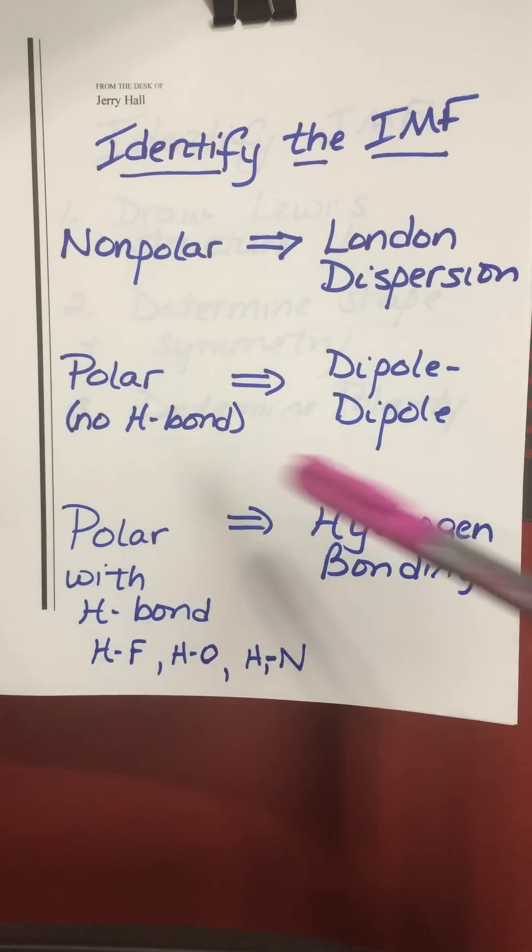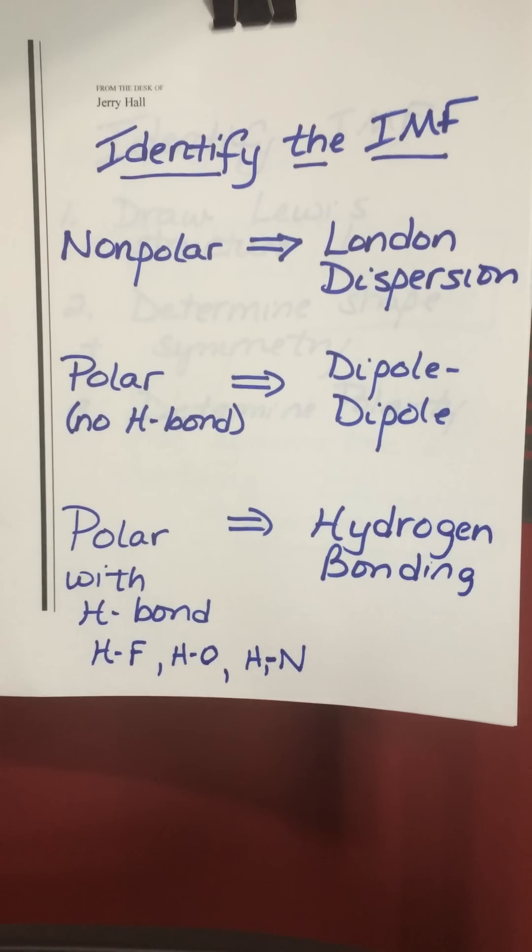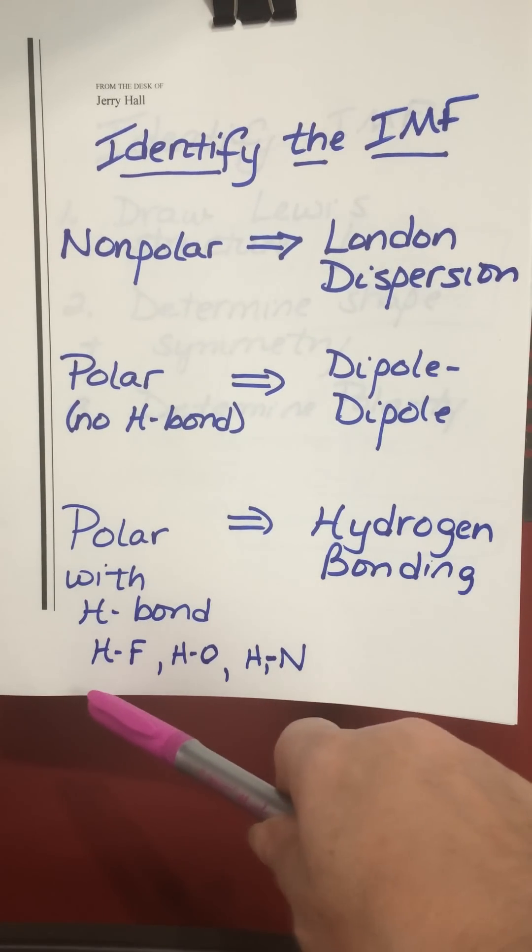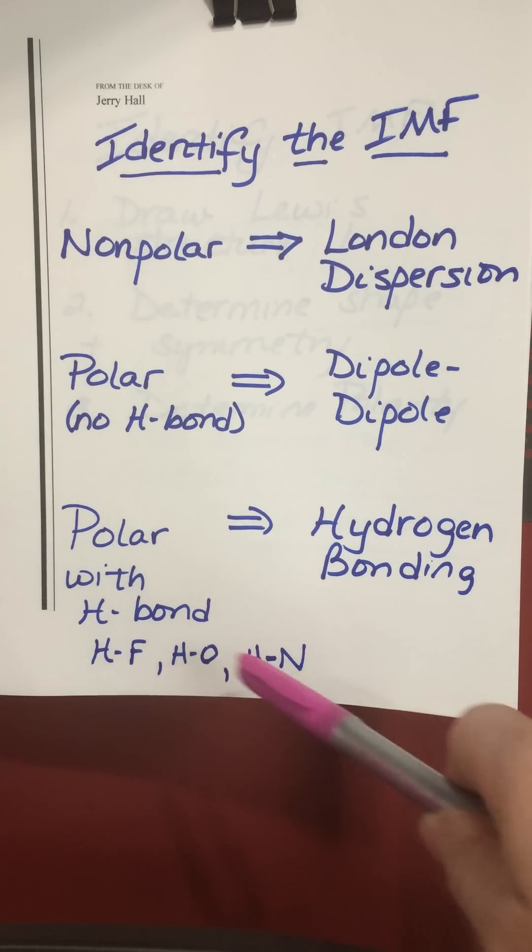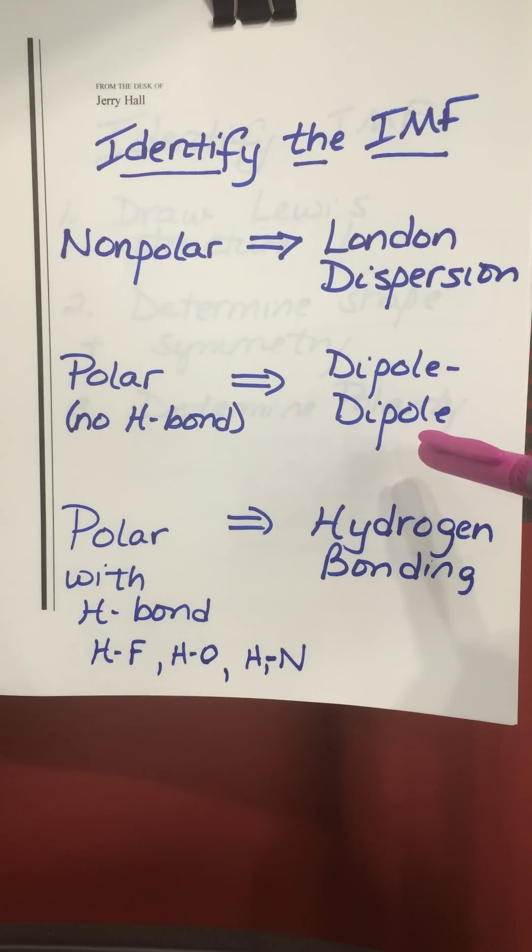If the molecule overall is polar and has no possibility of hydrogen bonding, in other words it does not contain a hydrogen bonded directly to either a fluorine, oxygen, or nitrogen, then its predominant intermolecular force is the dipole-dipole attraction.